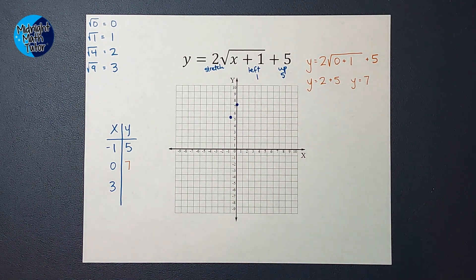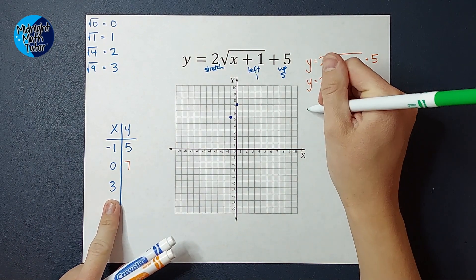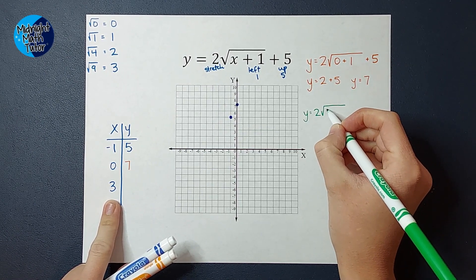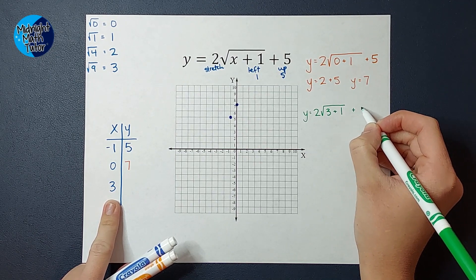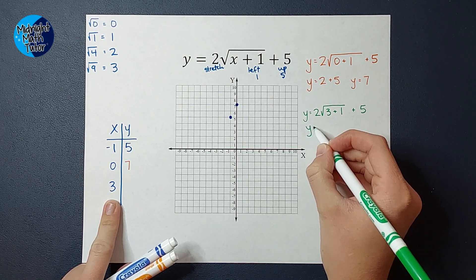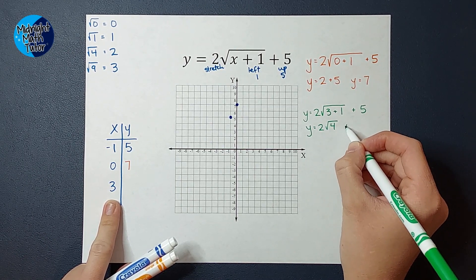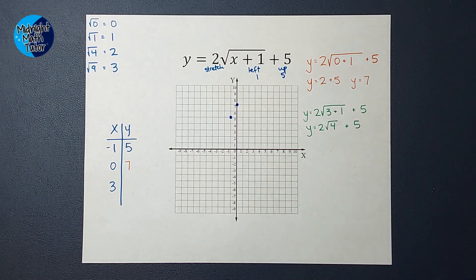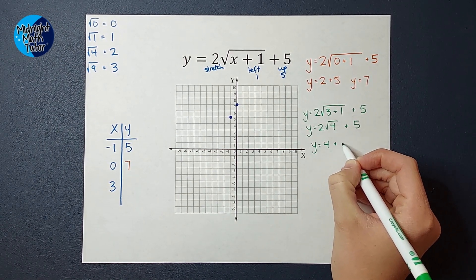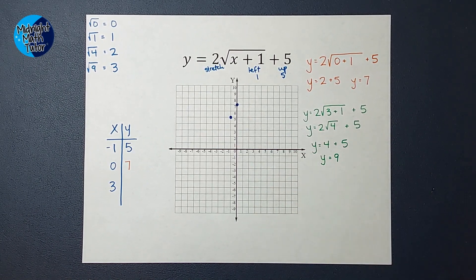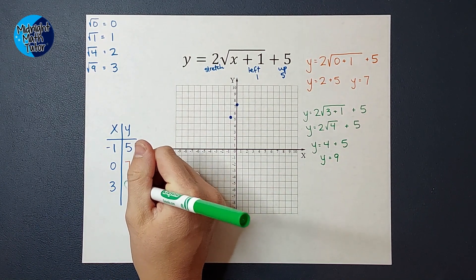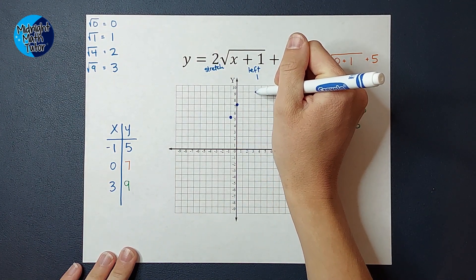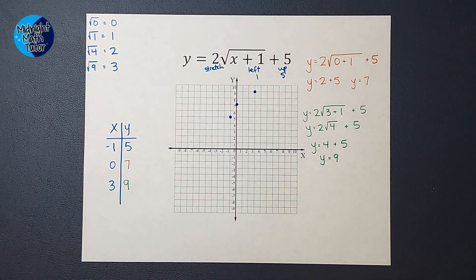Let's find one more point — plugging in 3 for x. So y equals 2 times the square root of 3 plus 1, plus 5. The square root of 4 is 2, and 2 times 2 is 4, so it's going to end up being 4 plus 5. Y equals 9. So when I plugged in 3 for x, I got 9 for y. Let's put that point on here: 3, 9.